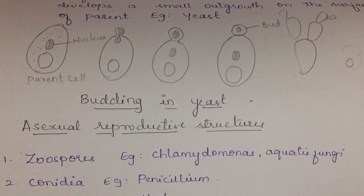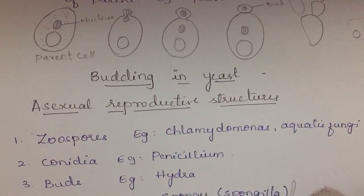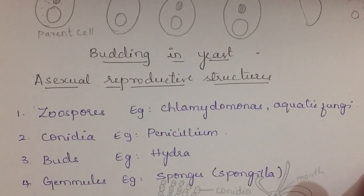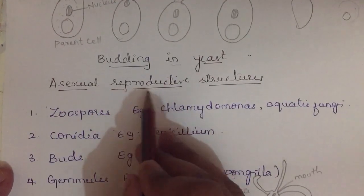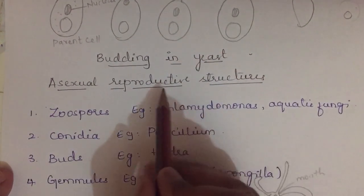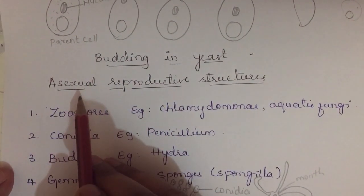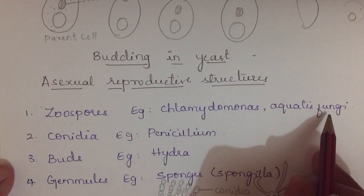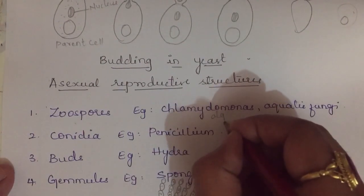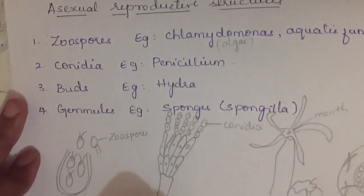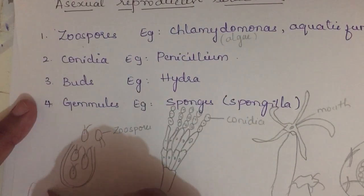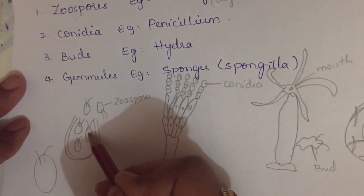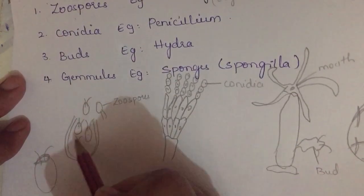Asexual reproductive structures also come under asexual reproduction. The first is zoospores, produced by Chlamydomonas and aquatic fungi. Chlamydomonas is a unicellular alga. When it produces spores, the outer part opens and the spores formed inside are released out.